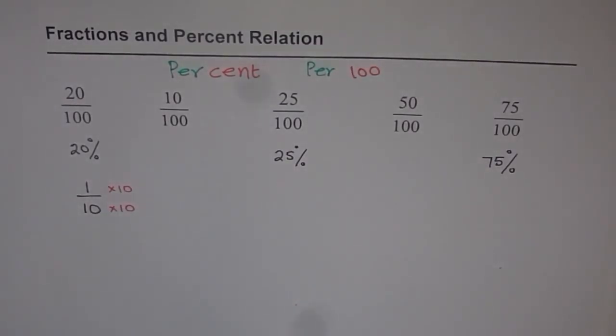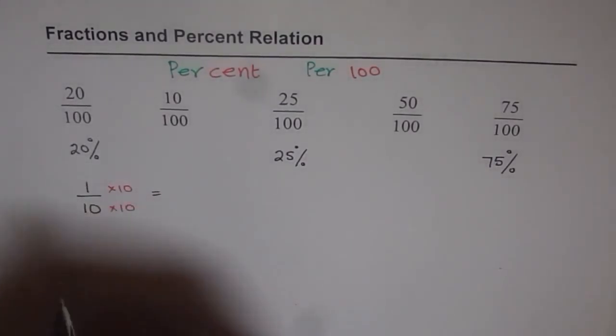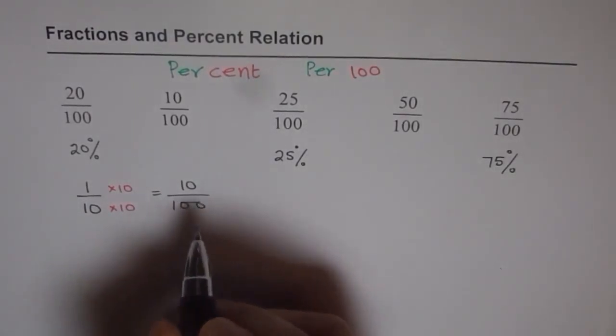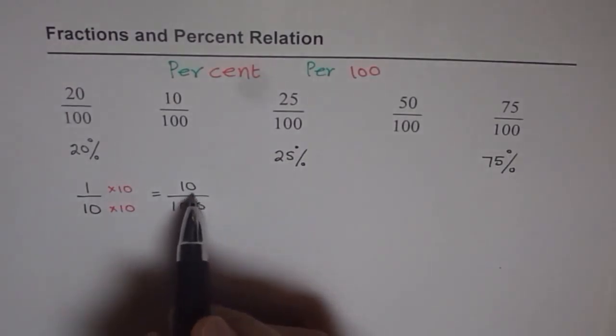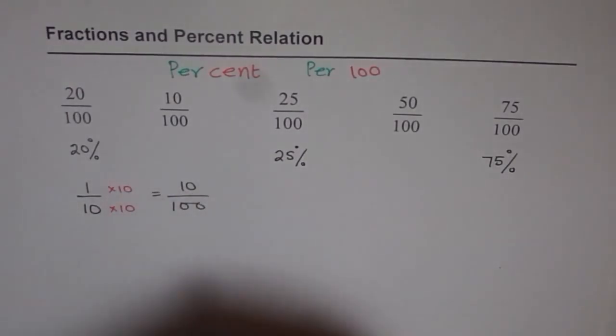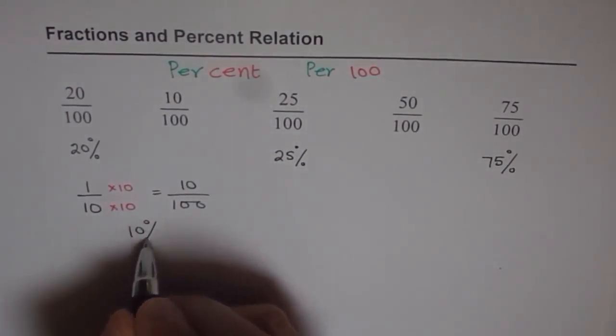If we do that, what do we get? 1 times 10 is 10 and 10 times 10 is 100. So we get 10 percent. Do you see that? That is 10 percent. So this could be written as 10 percent.